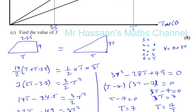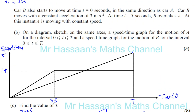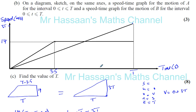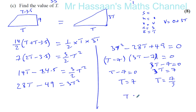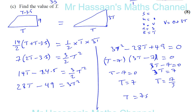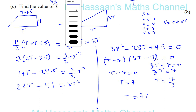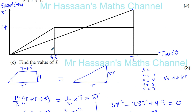So T equals 7 or T equals 7 over 3. Now, it says find the value of T — there's only one value. T is definitely more than 3.5 seconds, because at T seconds A is moving at constant speed, which only starts after 3.5 seconds. So it can't be 7 over 3, because 7 over 3 is less than 3.5. Therefore T must equal 7 seconds.